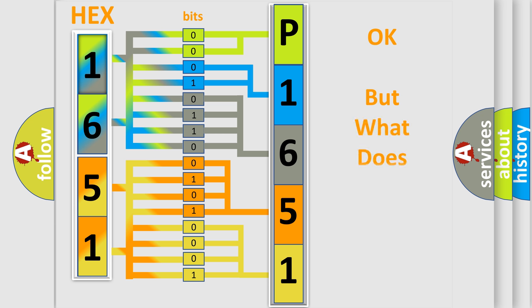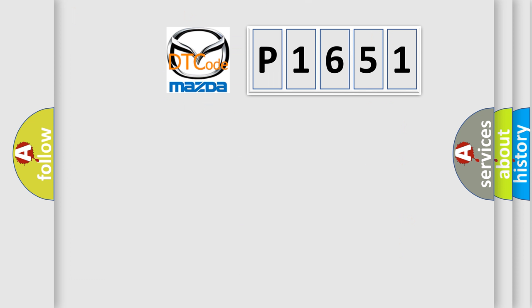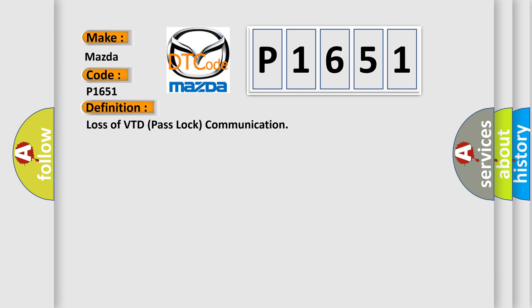We now know how the diagnostic tool translates the received information into a more comprehensible format. The number itself does not make sense if we cannot assign information about what it actually expresses. So, what does the diagnostic trouble code P1651 interpret specifically for Mazda car manufacturers? The basic definition is: Loss of VTD pass lock communication.